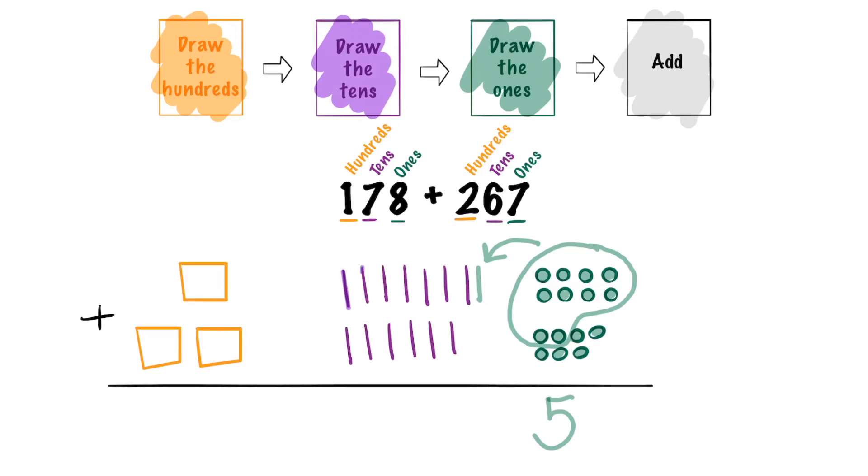Let's add up our tens. 1, 2, 3, 4, 5, 6, 7, 8, 9, 10. Oh 10 tens makes 100 so we need to move those over to the hundreds place where they belong. We put them together to make 100.